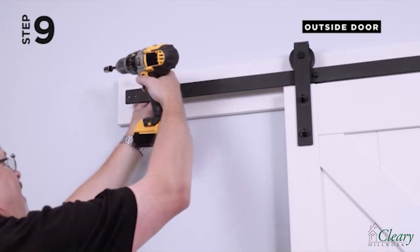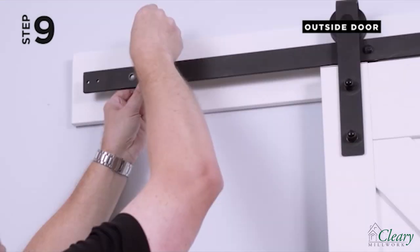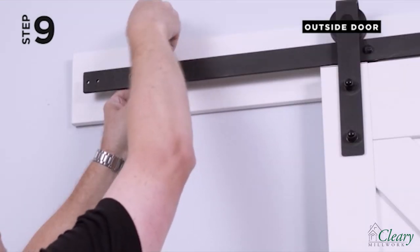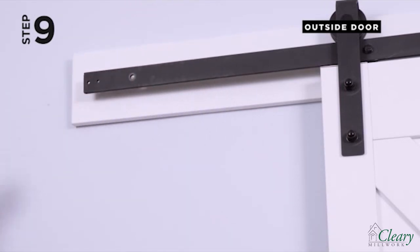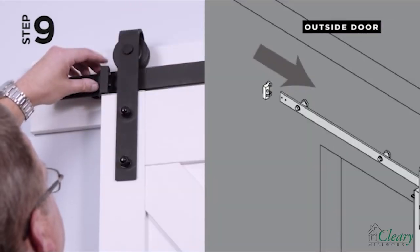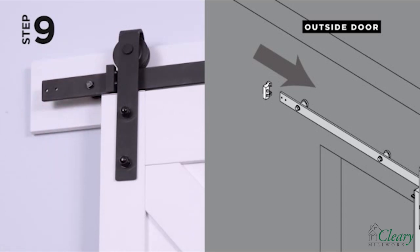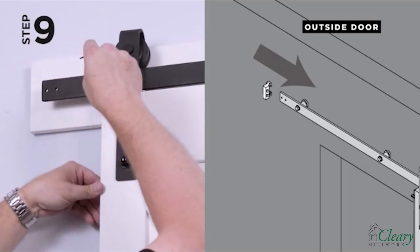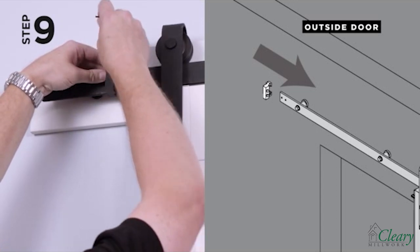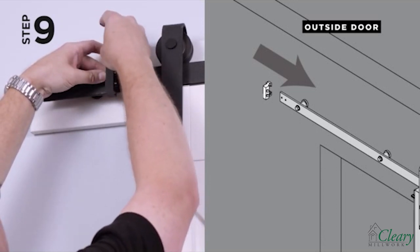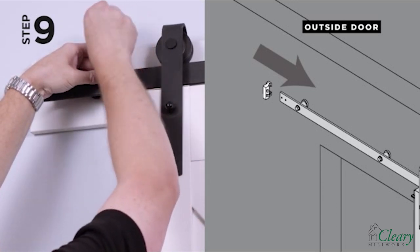Step 9. Remove the existing door stops from each end of the track. Replace with the end stops provided. Position end stops so the door is in the desired open and closed position and tighten the set screws with an Allen key. Note, the new end stop should work on most standard 78 ¾ and 96 inch tracks.